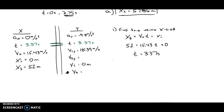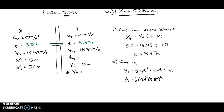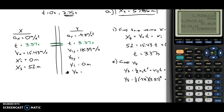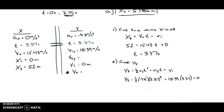Now that we have the time, the second step is to find the final position in Y using the Y side. The equation is: Y_final = ½ × a_y × t² + V_initial_y × t + Y_initial. So Y final equals one half of negative 9.8 times 3.37 squared, plus 18.39 times 3.37, plus the initial position of zero. Calculating: 0.5 × (−9.8) × (3.37²) + 18.39 × 3.37 gives us Y final = 6.33 meters.